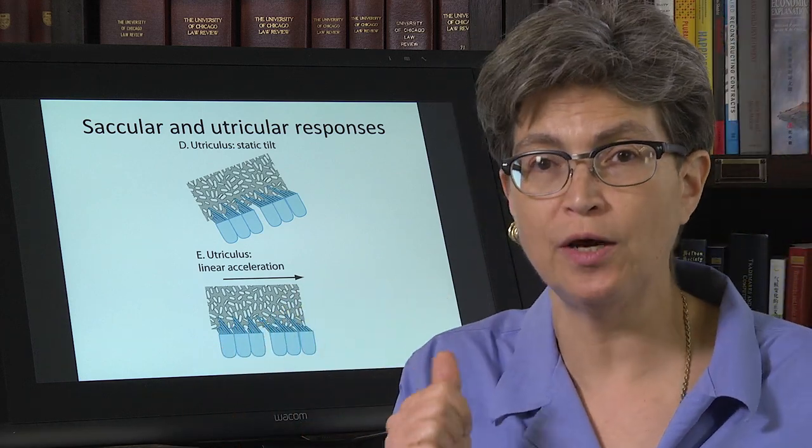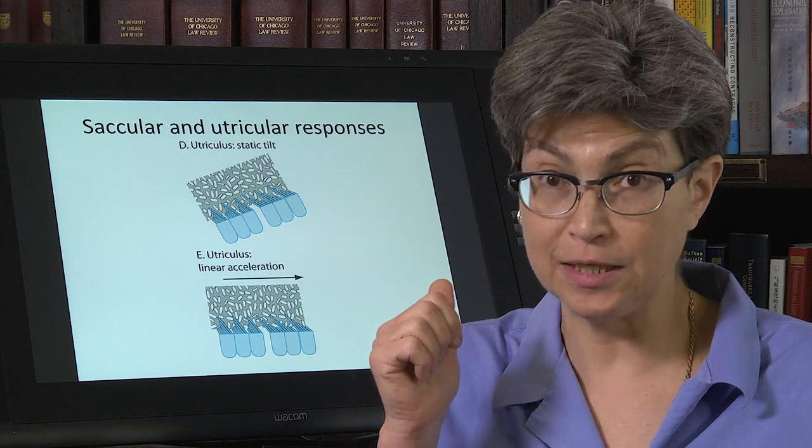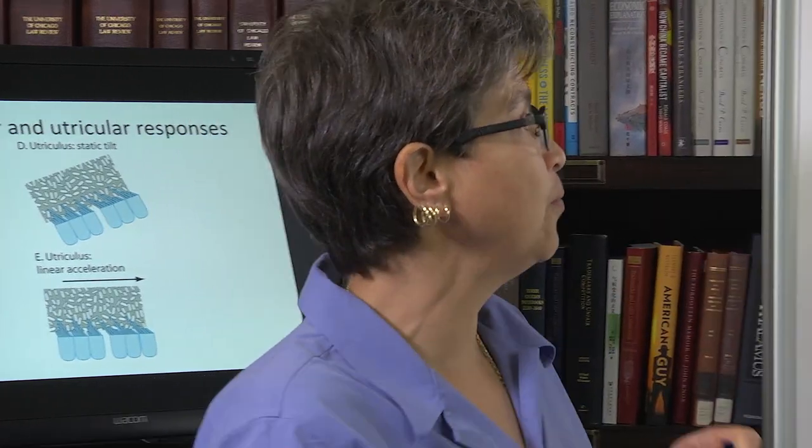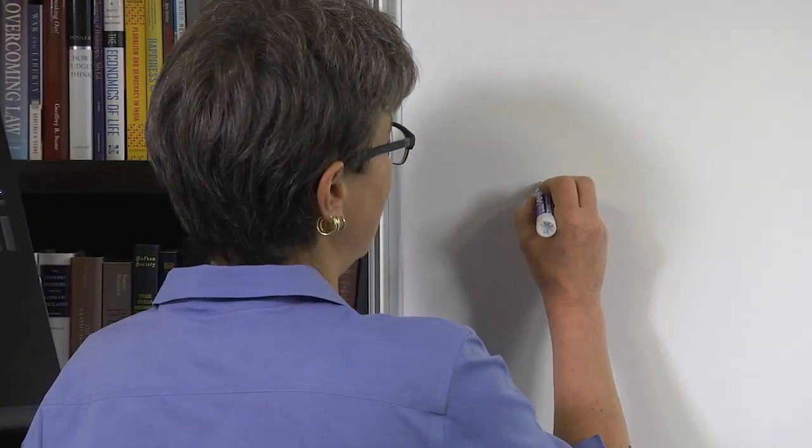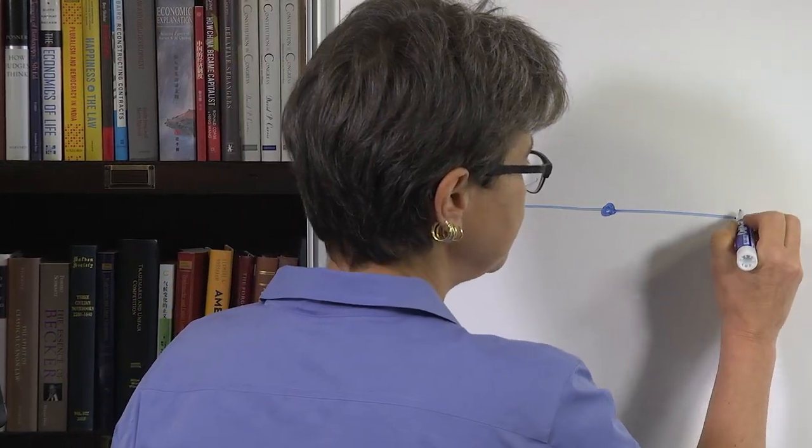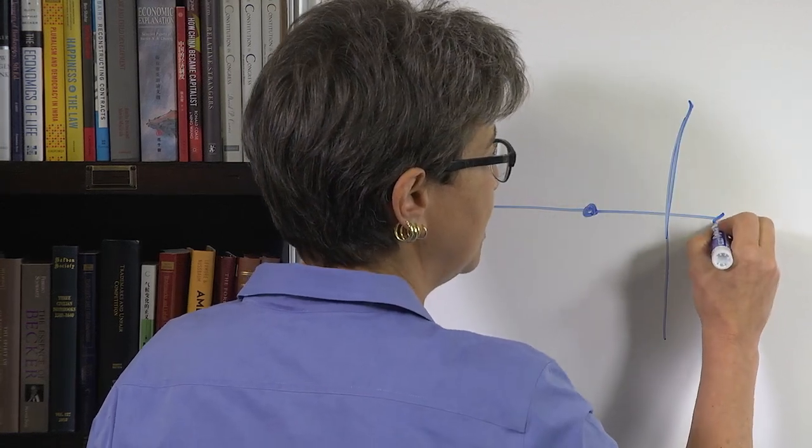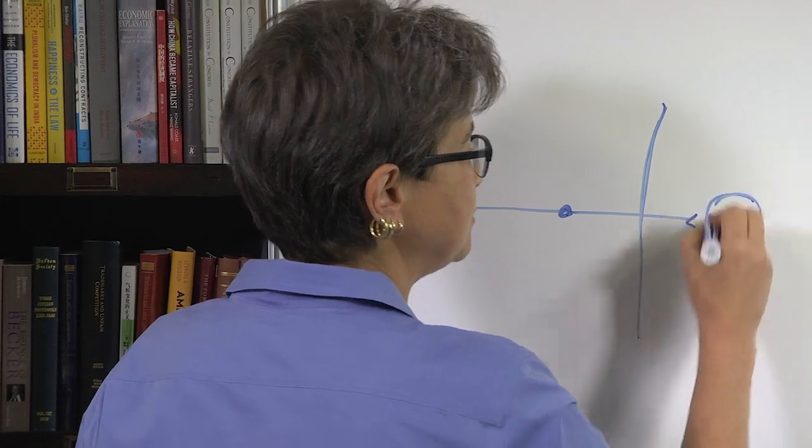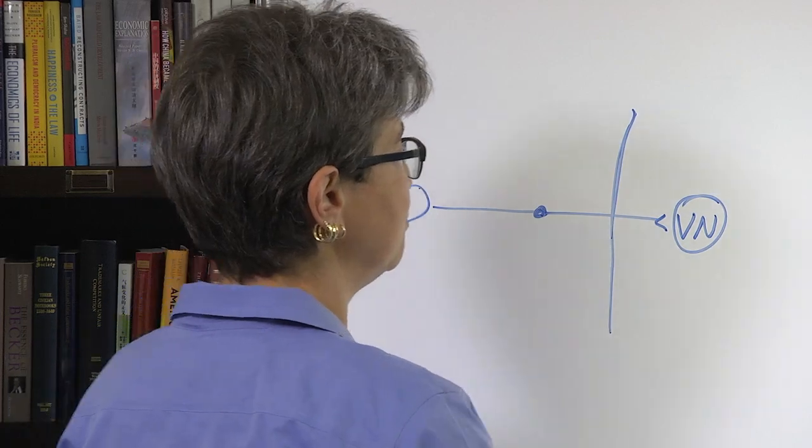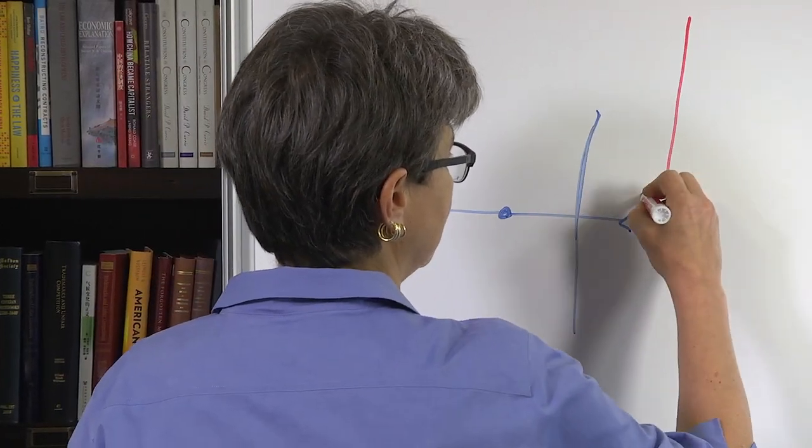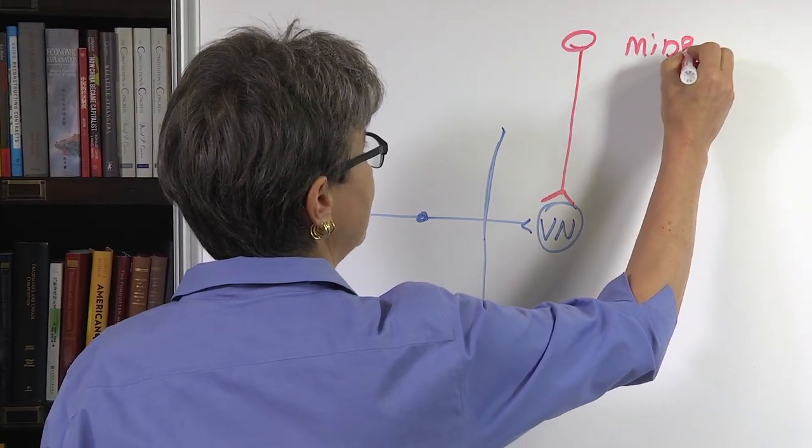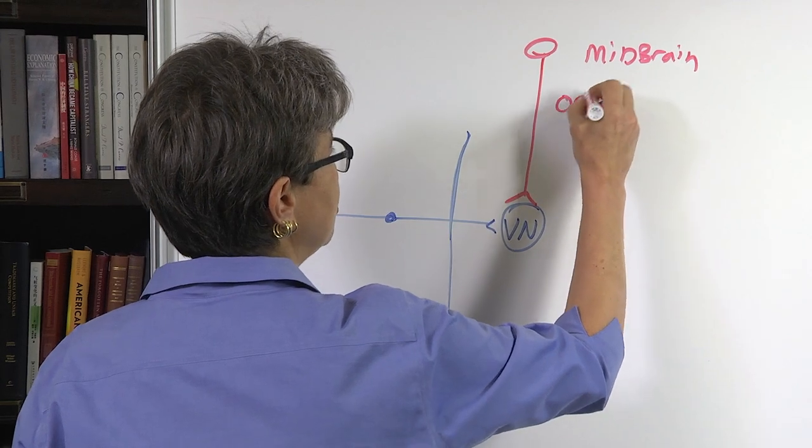But in addition, there's one other thing that gets added that is a big player in interpreting vestibular signals. And if we go over to the board, what we've seen so far is that let's say there's information coming in from a canal and it comes into the central nervous system and it synapses on a vestibular nucleus neuron. Well, it turns out that another major input that this neuron gets comes from the midbrain and it carries information about what's called optic flow.